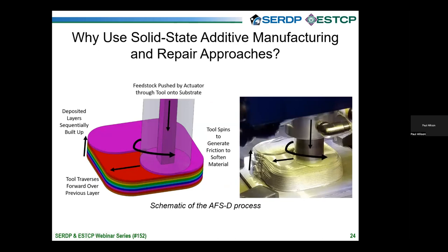The approach we've taken is solid-state additive friction stir deposition. The schematic shows how we push a feedstock through our tool and raise the tool to set layer height. We're taking advantage of physics learned from friction stir welding, except here the pin tool is replaced by the feedstock being pushed through. We build up components layer by layer — taking hard, solid metal and generating heat and plastic strain to soften it, taking advantage of flow stress, temperature, and strain rate dependence to spread the material like softened butter.